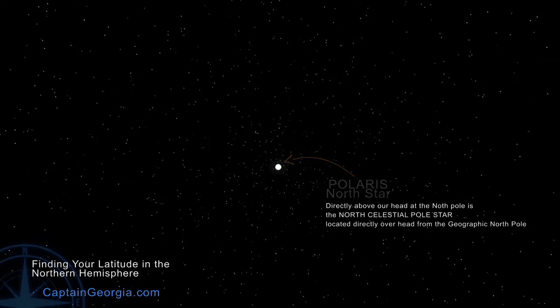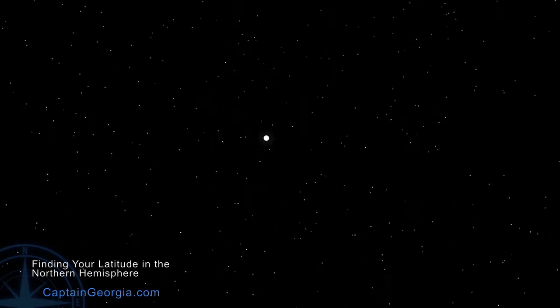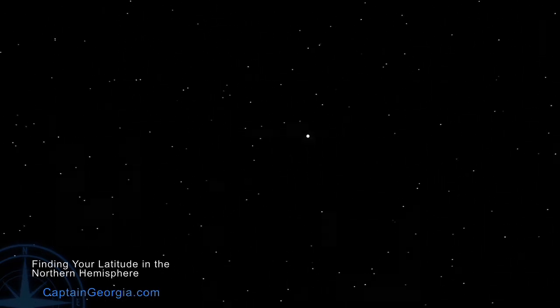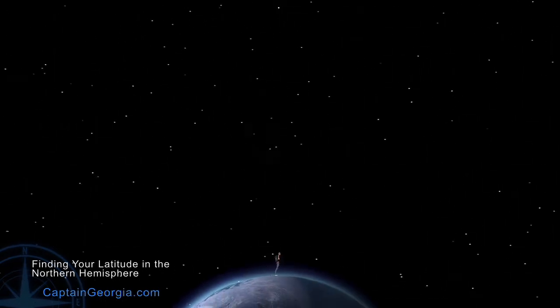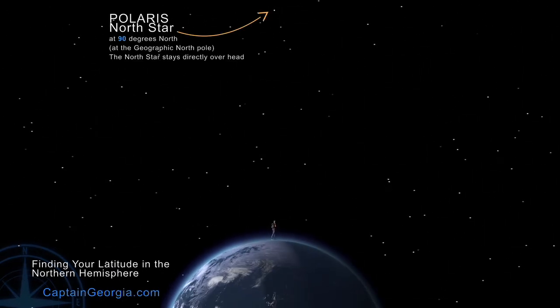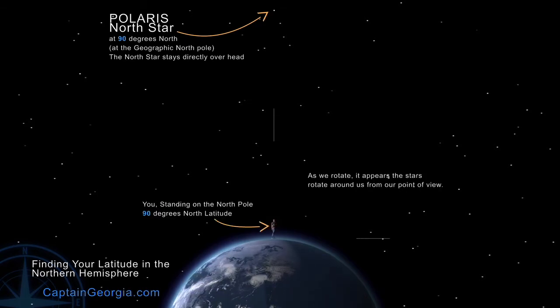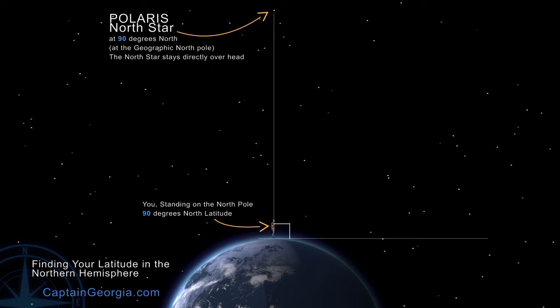Back on Earth, we can look up at the North Star — our polar star — draw an imaginary line, or visualize an imaginary line. Then we can look out at the horizon again, visualizing an imaginary line, and that angle between those two lines is 90 degrees, just like we did with the equator.